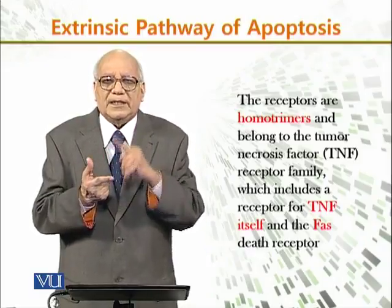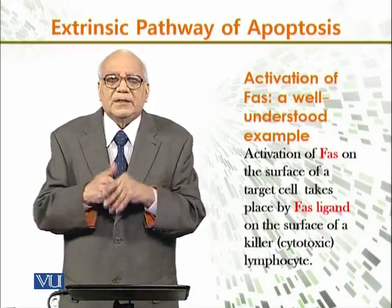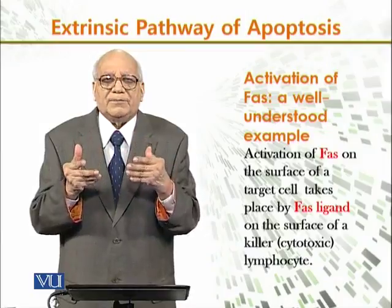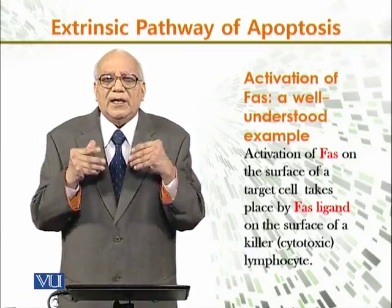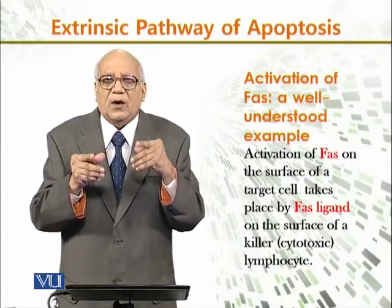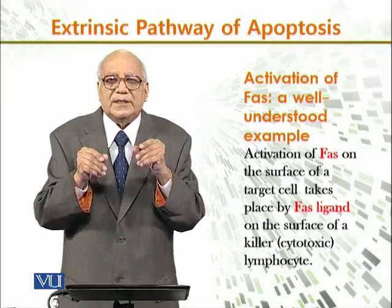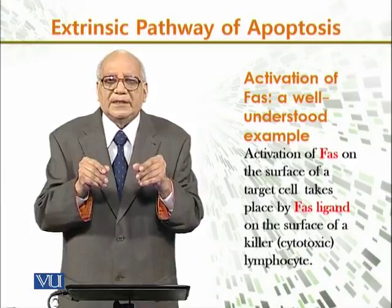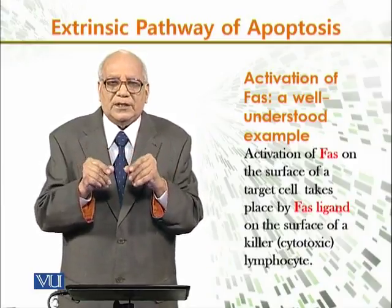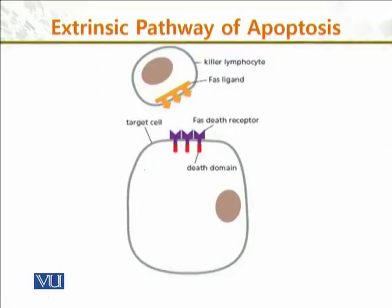Now we take another example: the death receptor, which is the FAS death receptor. Activation of FAS on the surface of the target cell takes place by FAS ligand. It is a well-understood ligand-controlled example. The FAS ligand is on the surface of the killer, which is the cytotoxic lymphocyte. As shown in this diagram, the killer lymphocyte at the top has the FAS ligand, which joins to the death receptor and carries out the apoptosis cell death program.